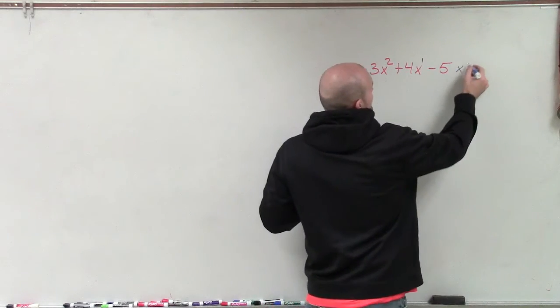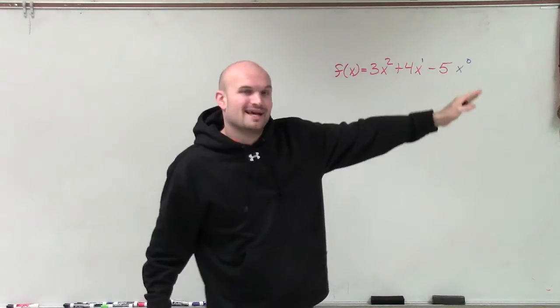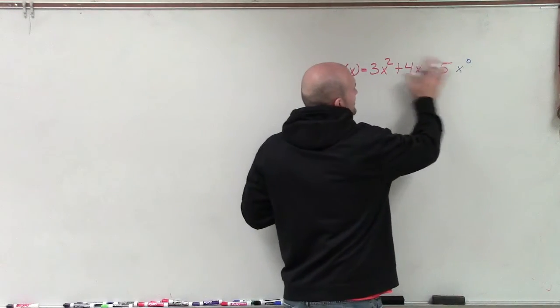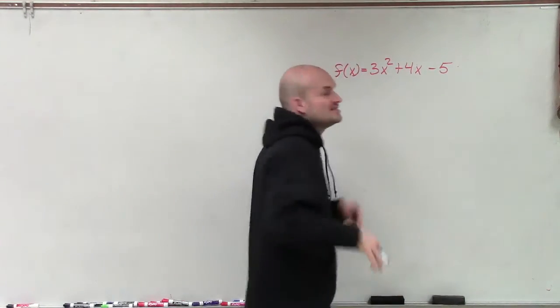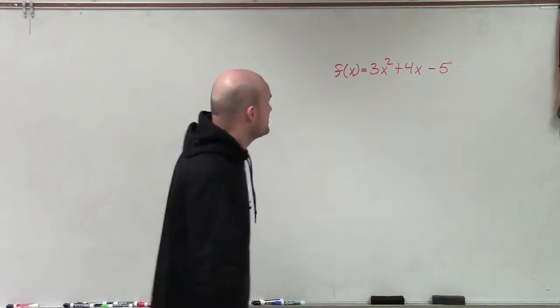And we could just rewrite this. You could see where it goes 2, 1, and then 0. But a lot of times, we don't really write those in there. But just to make sure you can see that, all right, now this is in descending order.